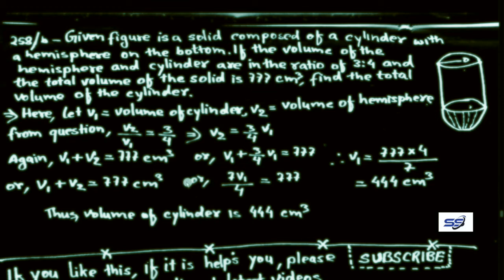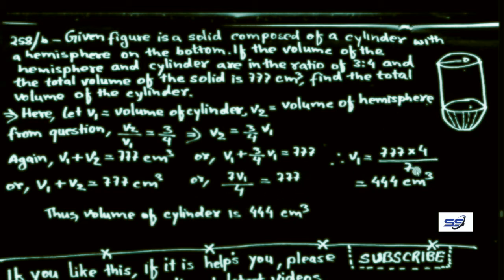Since V1 + V2 = 777 cm³, substituting V2 = (3/4)V1 gives V1 + (3/4)V1 = 777, so (7/4)V1 = 777. Therefore V1 = 777 × 4/7 = 444 cm³. The volume of the cylinder is 444 cm³.